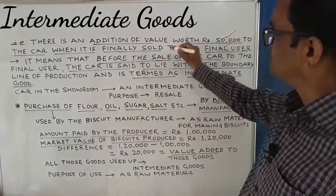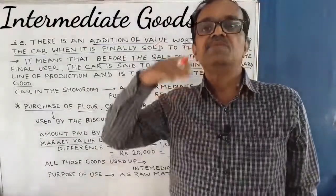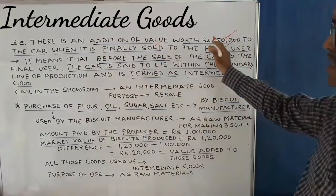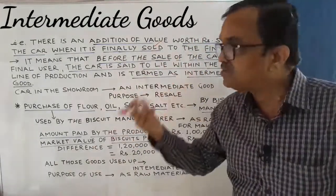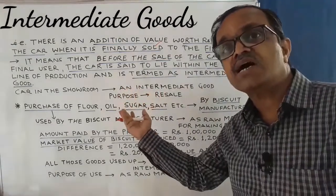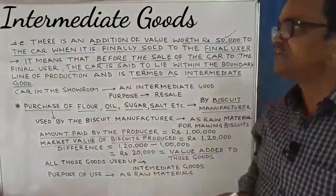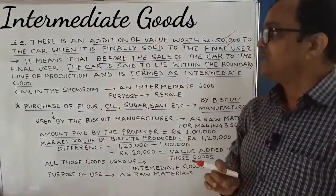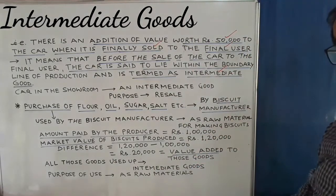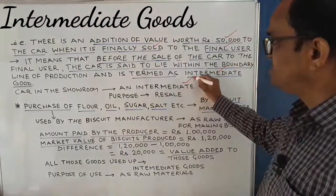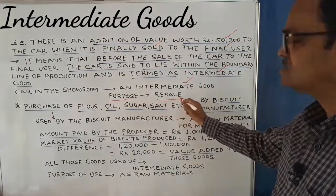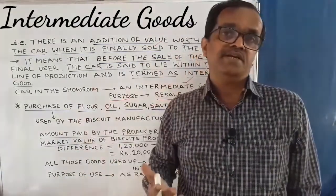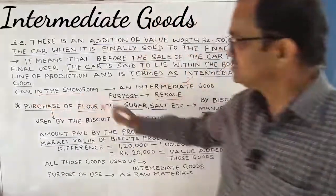When it is finally sold to the final user, the car is said to lie within the boundary line of production. And therefore, it is termed as an intermediate good. The car in the showroom is an intermediate good. The purpose is resale — the dealer has purchased it from the company for resale. Therefore, the car in the showroom is an intermediate good.